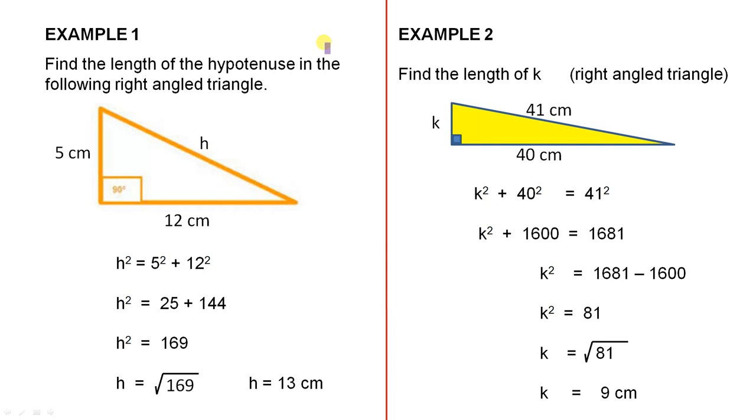So we have two examples here to demonstrate how we use Pythagoras' Theorem. Example one says, find the length of the hypotenuse in the following right angle triangle.